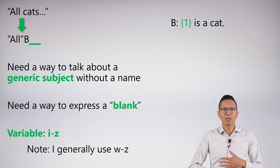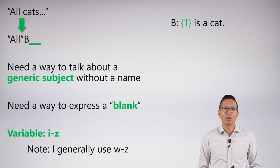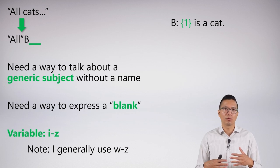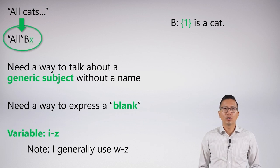A variable is really just going to express this blank that can be filled in. And in our system, variable letters are going to be letters i through z. Just as a note, I would generally use the tail end of the variable letters, but it doesn't really matter. If you wanted to use i, j, k, you for sure can.